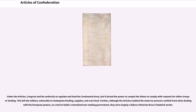Under the Articles, Congress had the authority to regulate and fund the Continental Army, but it lacked the power to compel the states to comply with requests for either troops or funding. This left the military vulnerable to inadequate funding, supplies, and even food. Although the Articles enabled the states to present a unified front when dealing with the European powers, as a tool to build a centralized war-making government, they were largely a failure, as historian Bruce Chadwick wrote.